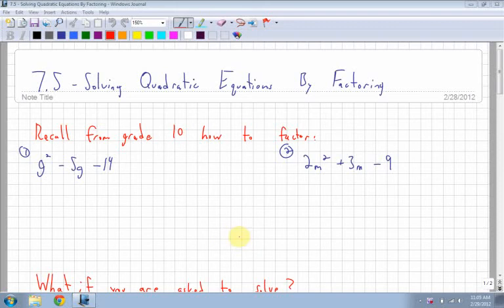Section 7.5 is solving quadratic equations by factoring. If you can recall from grade 10 how to factor, what we did is we had a quadratic like this and we had g squared minus 5g minus 14.